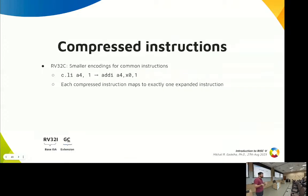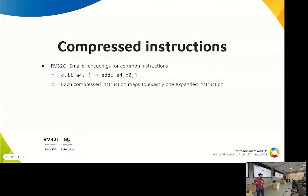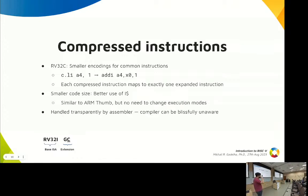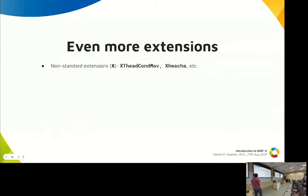If you want compressed instructions — remember all instructions are 32 bits — there's the C extension. It compresses instructions to 16 bits, similar to ARM Thumb. The great thing is the compiler doesn't care about it; you generate instructions and the assembler looks at your code and compresses it for you. If you support it, you now have RV32GC or RV64GC.